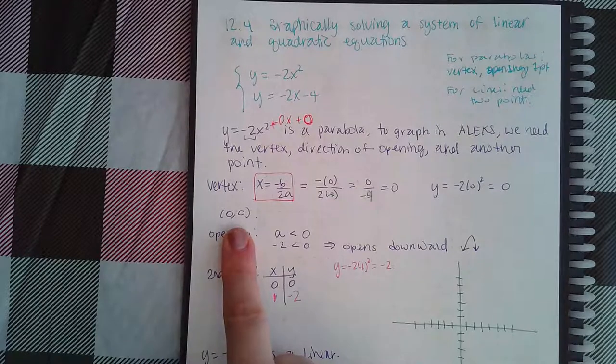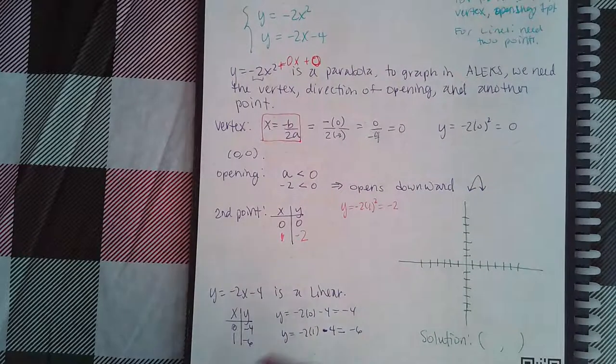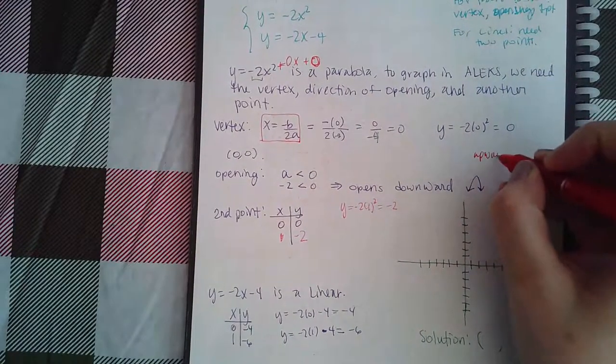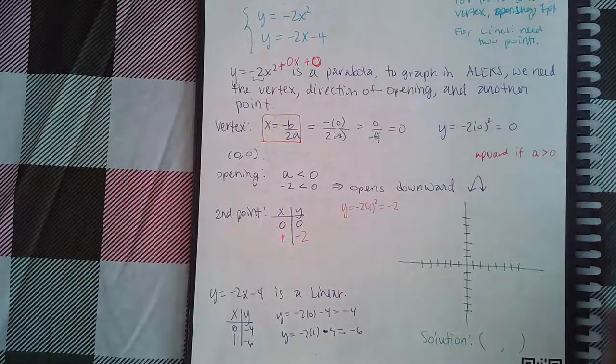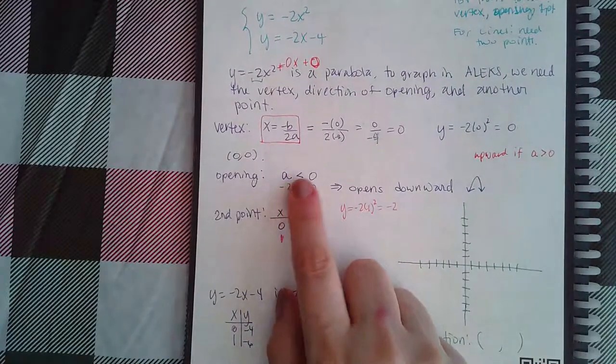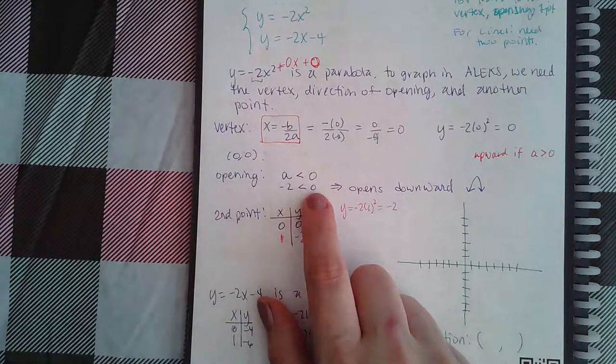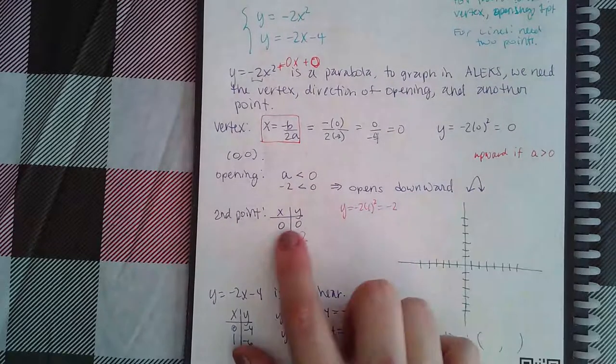Now to figure out which way it's opening, it's going to open upward if the a value is positive, greater than zero. But if my a value is less than zero—negative two is less than zero—then it means it's going to be opening downward.